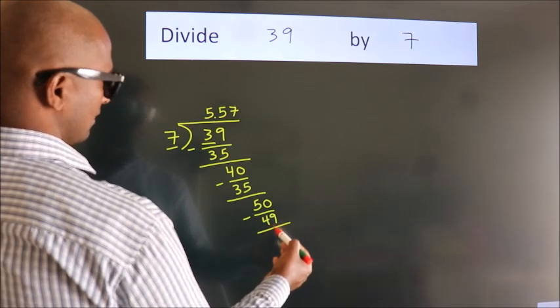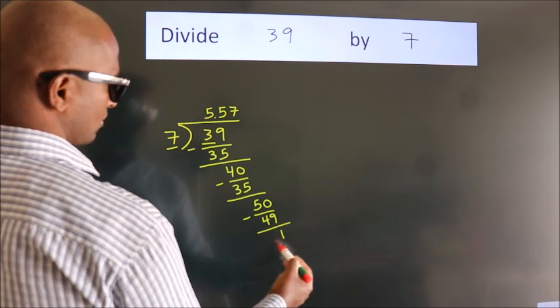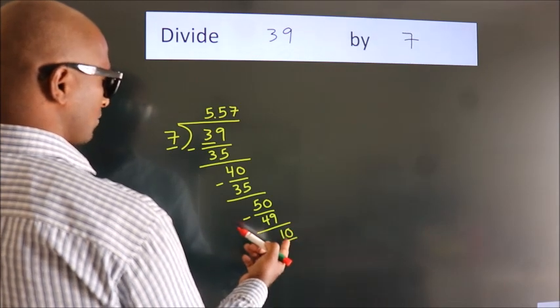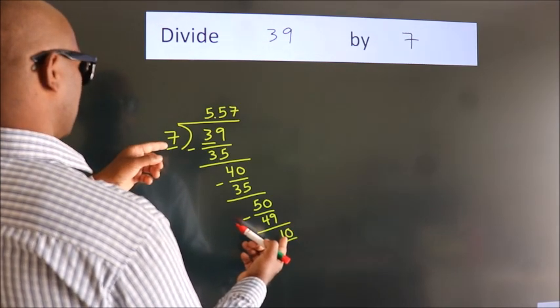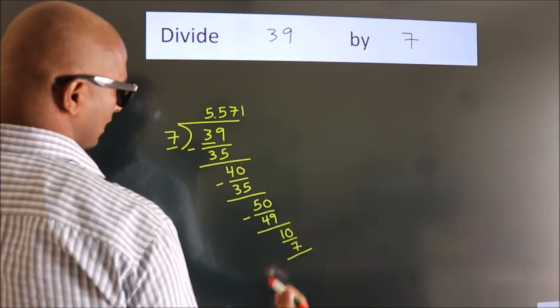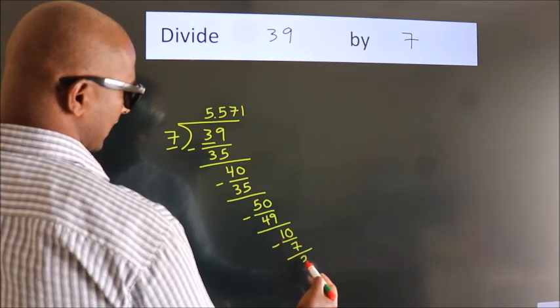After this, we already have the decimal. So directly take 0. So 10. A number close to 10 in 7 table is 7 ones 7. Now we subtract. We get 3.